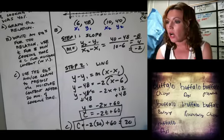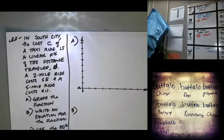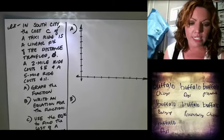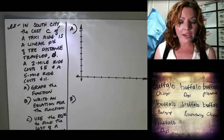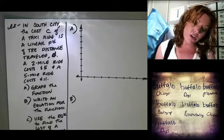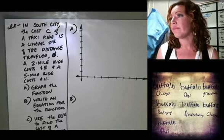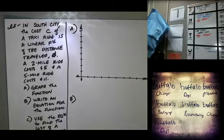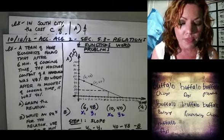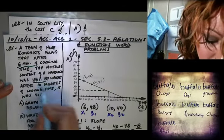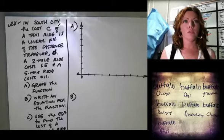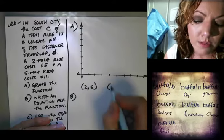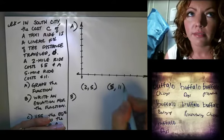All right, last problem. In South City, the cost c of a taxi ride is a linear function of the distance traveled d. A two-mile ride costs five dollars, and a five-mile ride costs eleven dollars. We're doing the same thing as the last problem. We need our coordinates, so that gives us (2, 5) and (5, 11).